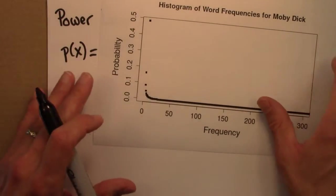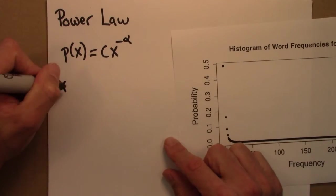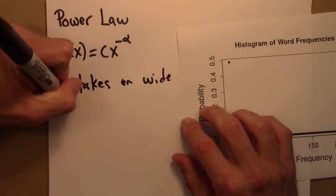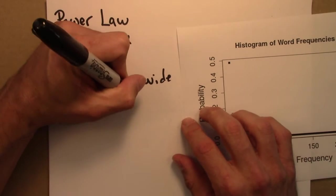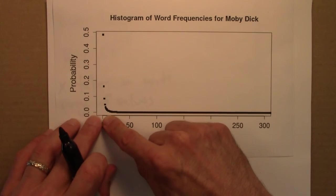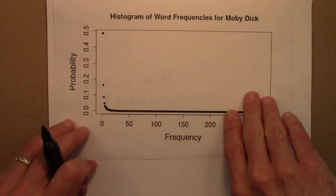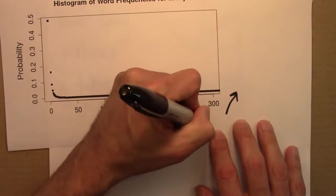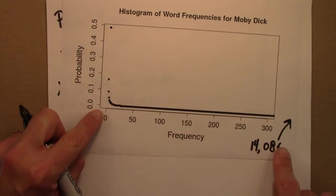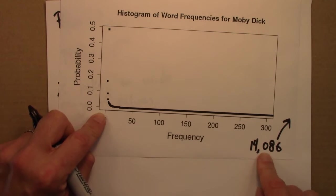A key feature of power laws is that x, the quantity of interest, takes on a very wide range of values. There are many words that appear only once, and the most frequent word appears way off the chart at 14,086. So the range of x goes from 1 to about 14,000 — a really, really big range.